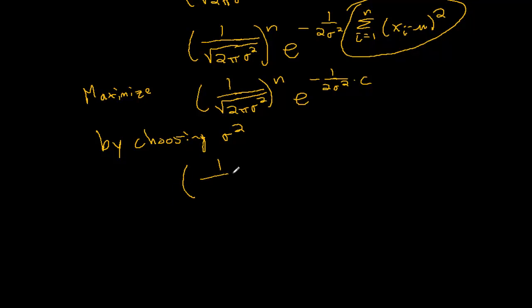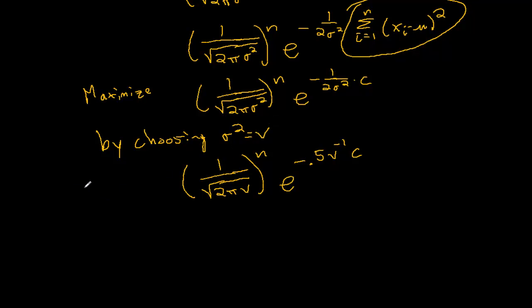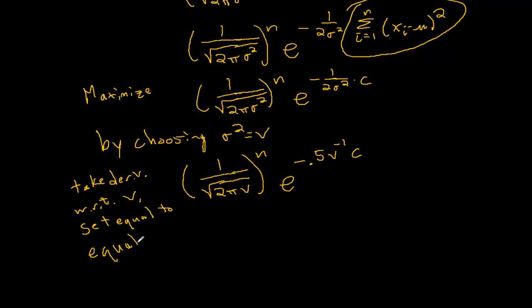So I have 1 over the square root of 2π times v to the power of n, times e to the negative 0.5 times v to the power of negative 1, times c. We're letting sigma squared equal v and we're going to take the derivative with respect to v and set it equal to 0. You might remember from Calc 1 that's a very common way to find the maximum or minimum of something.